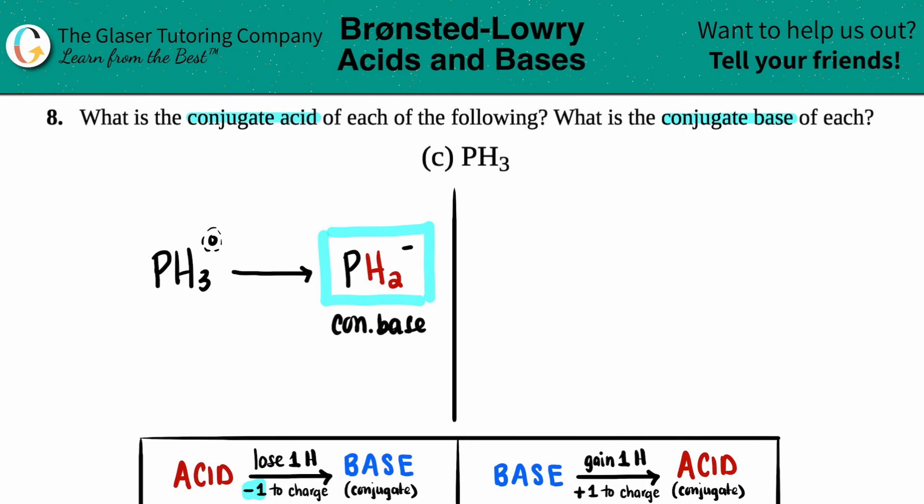Now we just have to do the same thing if PH3 was acting as a base, so that we can find the conjugate acid. Now in this case, an acid is always one more hydrogen. So all you got to do is just gain one. You just bump it up to the next number. So there were three hydrogens. What's the next number up? Yeah, four. So P is coming along for the ride. And now it would be H4.